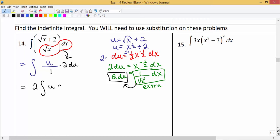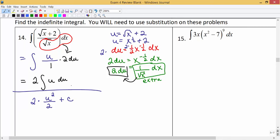Now this is pretty simple to integrate. We're going to add 1 to the power, divide by the new power, and then bring down the constant. Don't forget our plus c. We could simplify a little bit: the twos will cancel, so we're left with just u squared plus c.